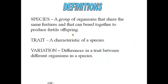A species is a group of organisms that share the same features and that can breed together to produce fertile offspring. If a group of organisms has the same types of features and they're able to reproduce and create fertile offspring, we call them a species. For instance, all the dogs you know of are one species — the canine species. It doesn't matter if it's a chihuahua or a German Shepherd; they can interbreed and still produce fertile offspring.